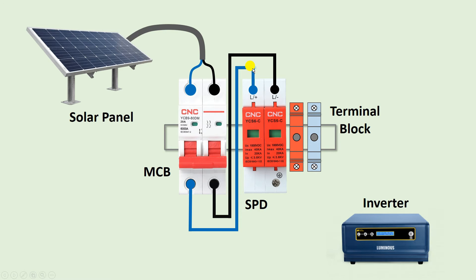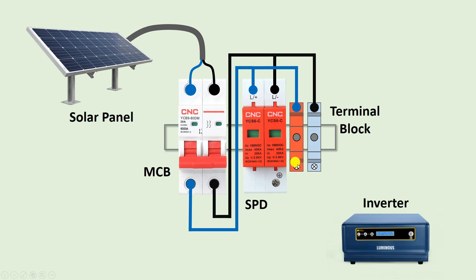On the negative terminal of the SPD, connect the negative power supply. So to this SPD we have provided the incoming power supply. Now from the positive terminal, connect a wire to the terminal block. Take the negative wire and connect it to the terminal block as well. The power supply going to the inverter must come from these terminal blocks, so connect wires from the terminals and provide power supply to the inverter.